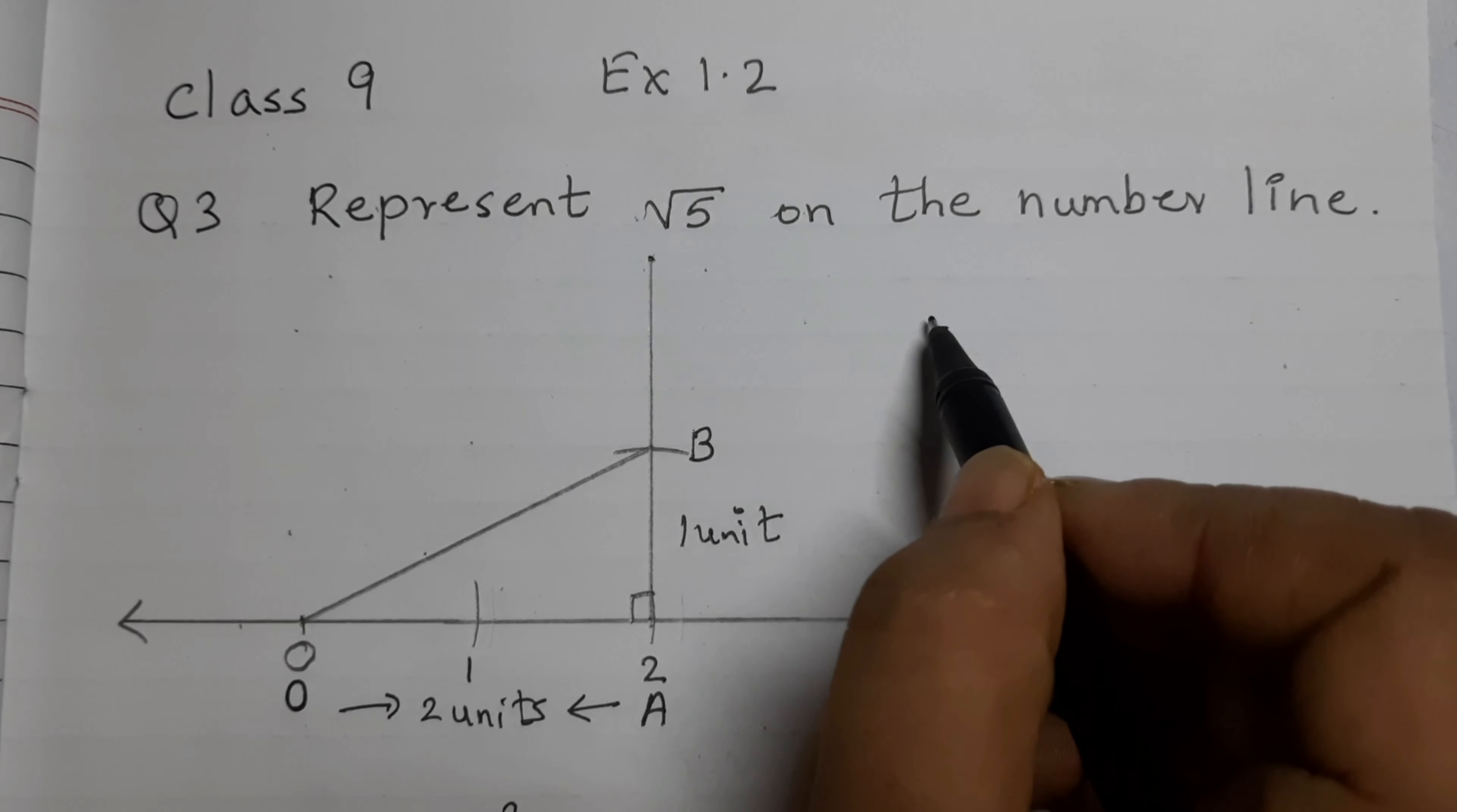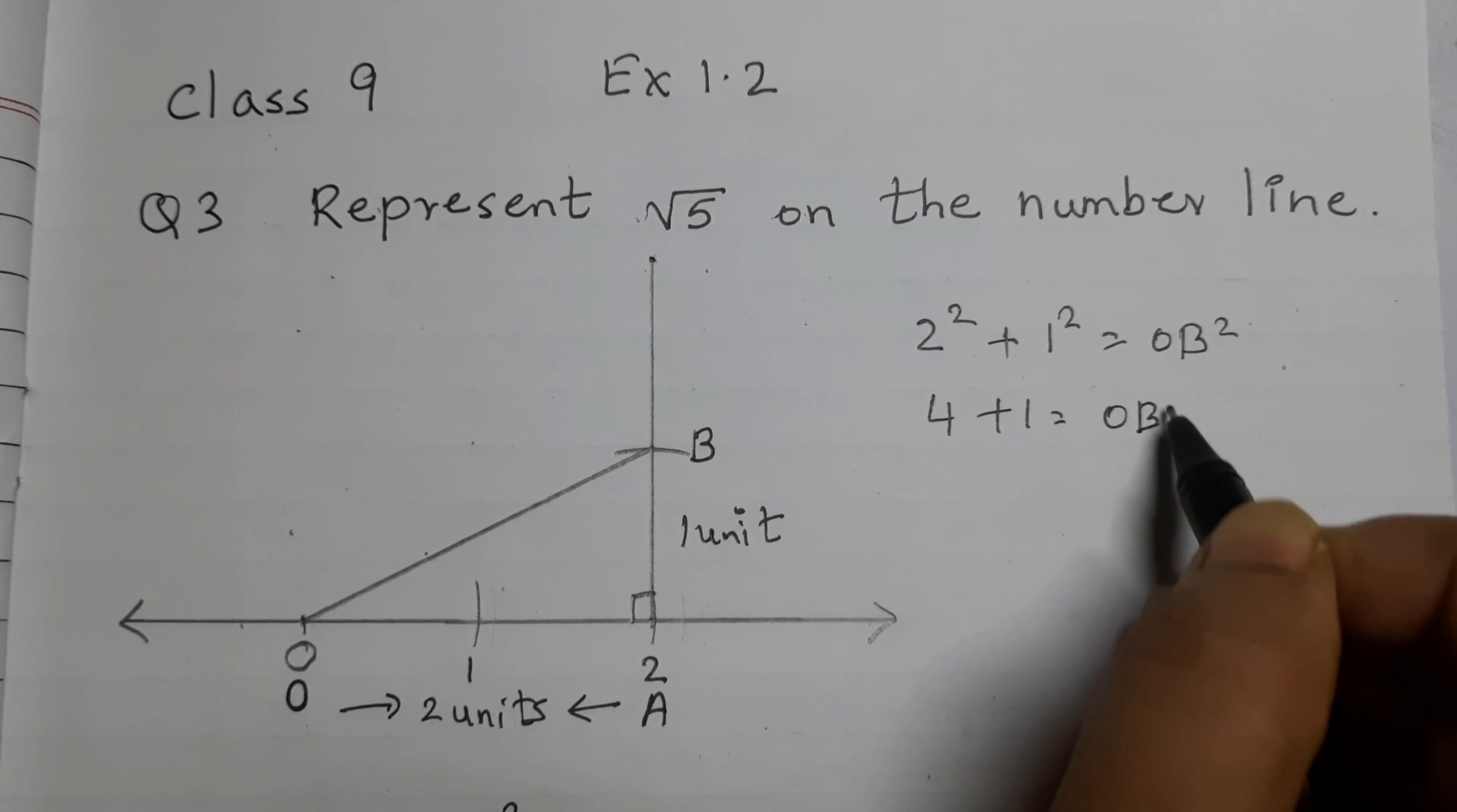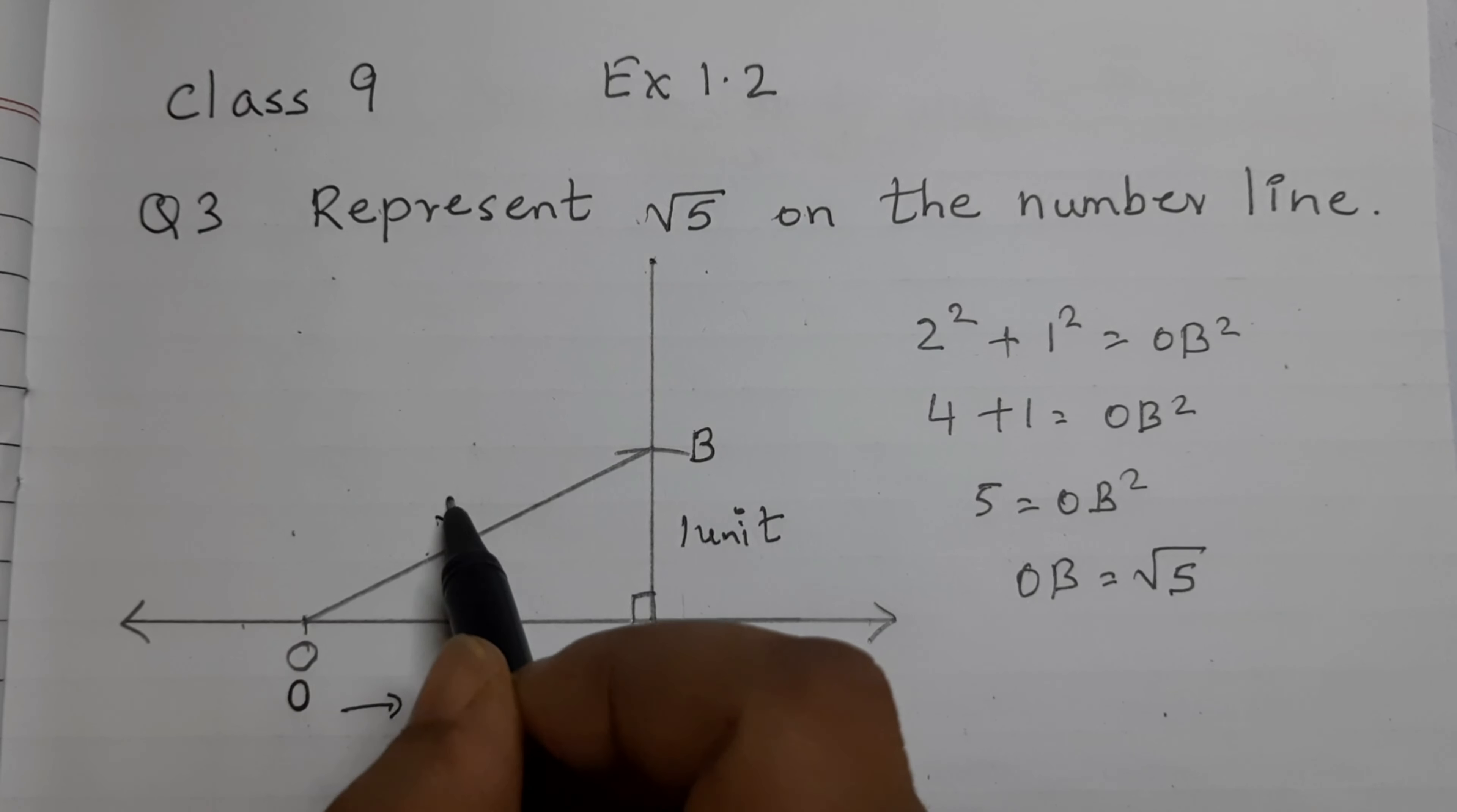Using Pythagoras theorem, we can say 2 squared, that is this length squared, 2 squared plus 1 squared is equal to O, B squared. 4 plus 1 equals to O, B squared or 5 is equal to O, B squared. So O, B is square root of 5. This length from O to B is square root of 5.